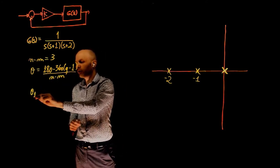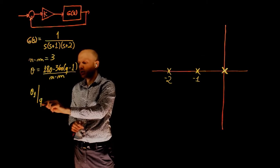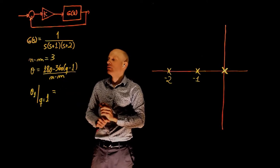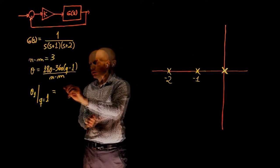Theta 1, the angle of the first asymptote, is obtained by setting q to 1, which is 180 minus 360 times 0 divided by 3, that is 60 degrees.